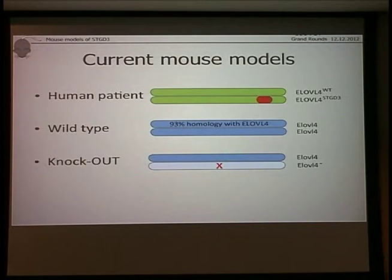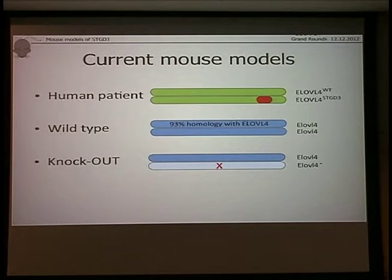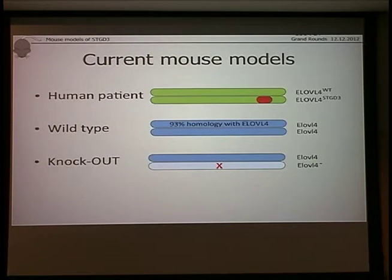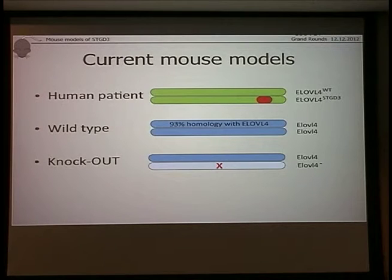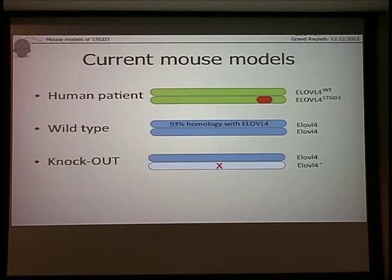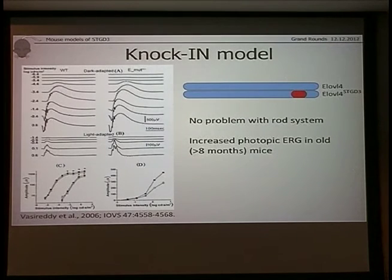When both copies were knocked out — a homozygous knockout — the mouse died within an hour after birth, usually within five minutes. This happened because ELOVL4 is also expressed in the skin, where it produces a type of lipid called ceramides, essential for the water barrier function of the skin. Without that, the mouse skin stays permeable to water and basically dries out as soon as it comes out of the mother. So this model was not helpful: the heterozygote didn't tell us anything and the homozygote died.